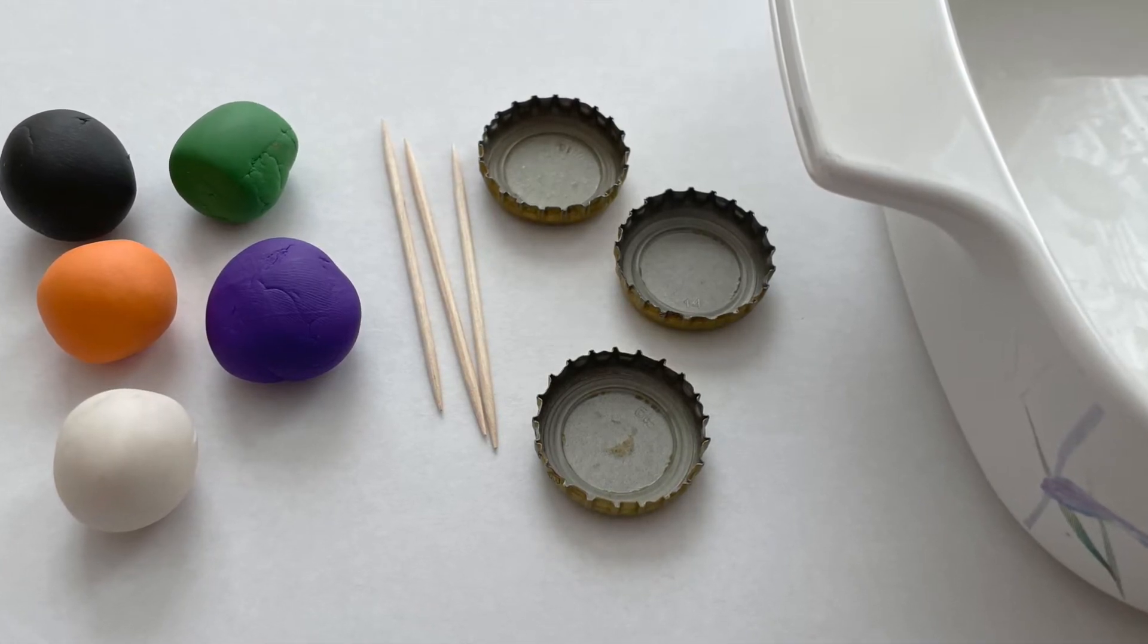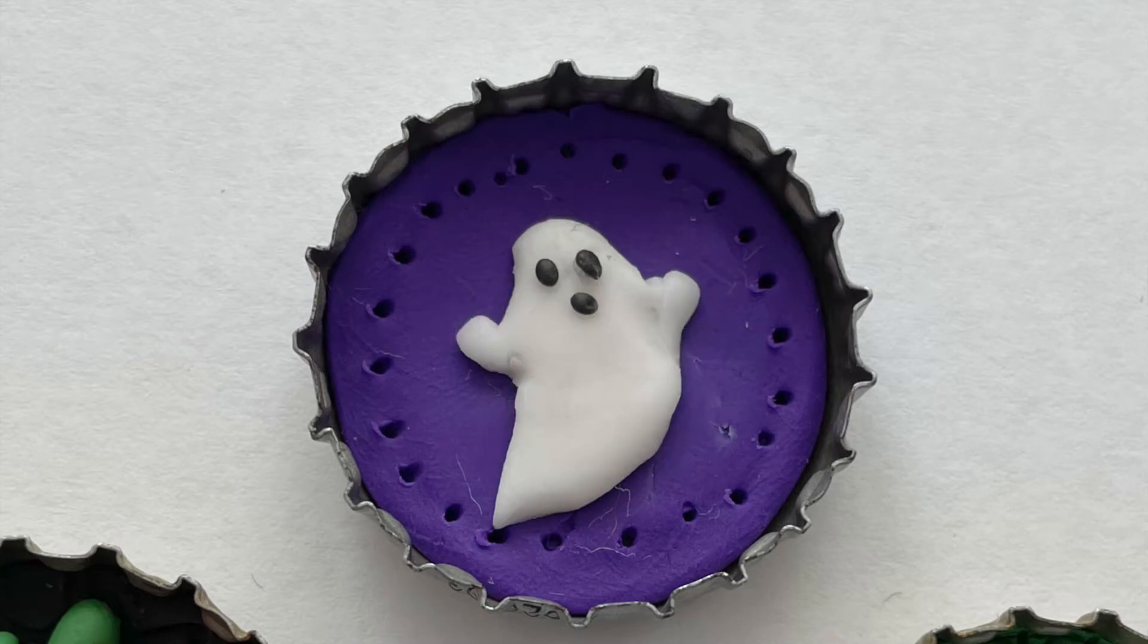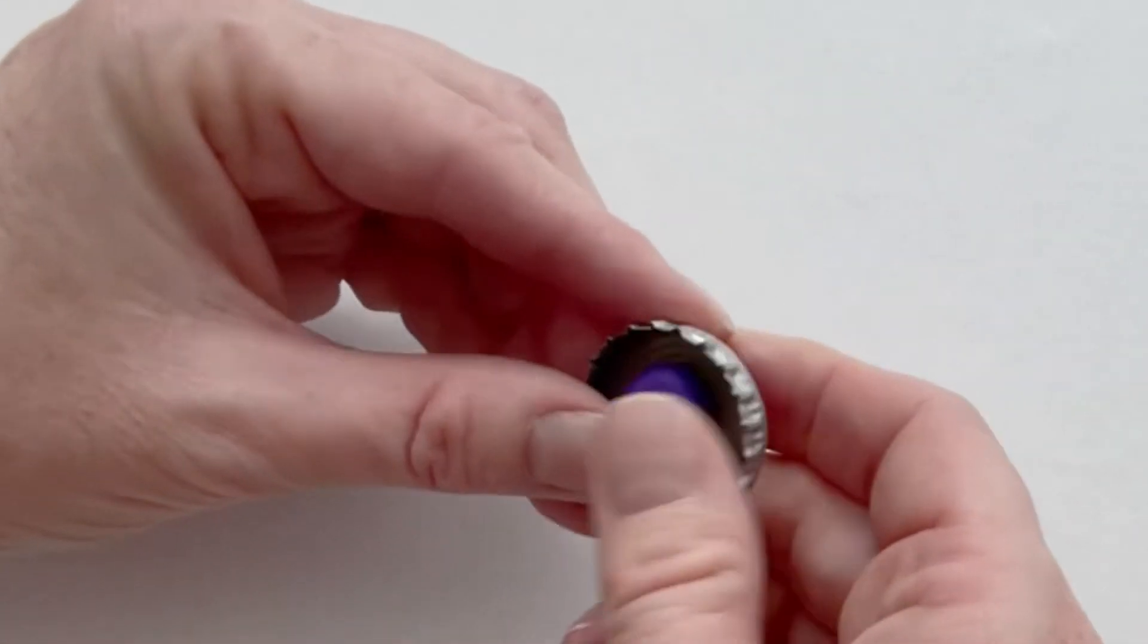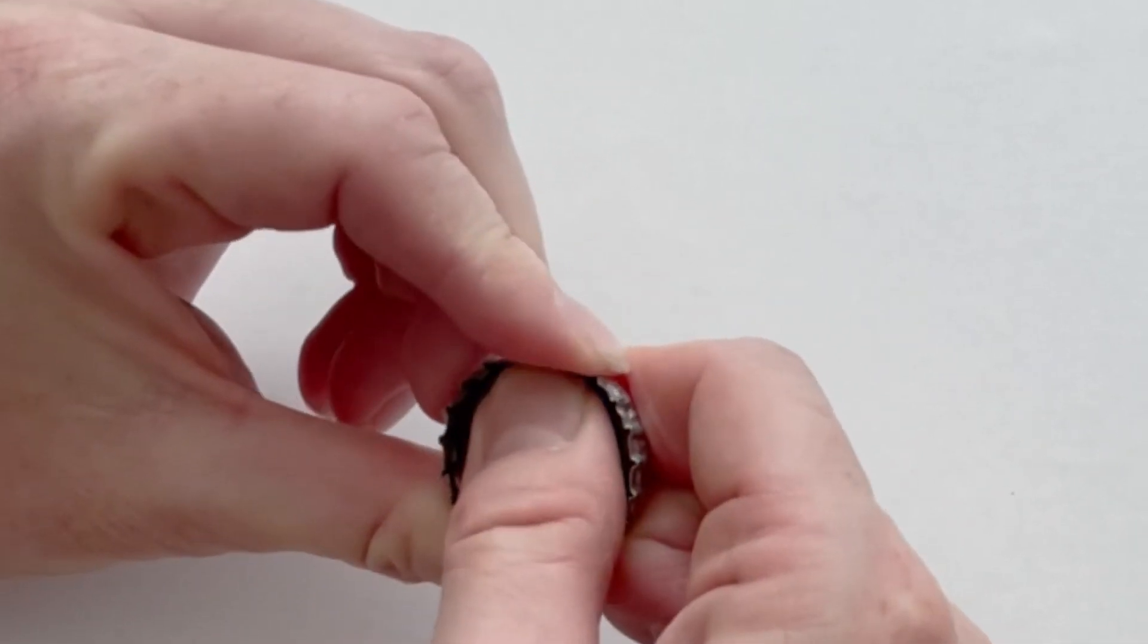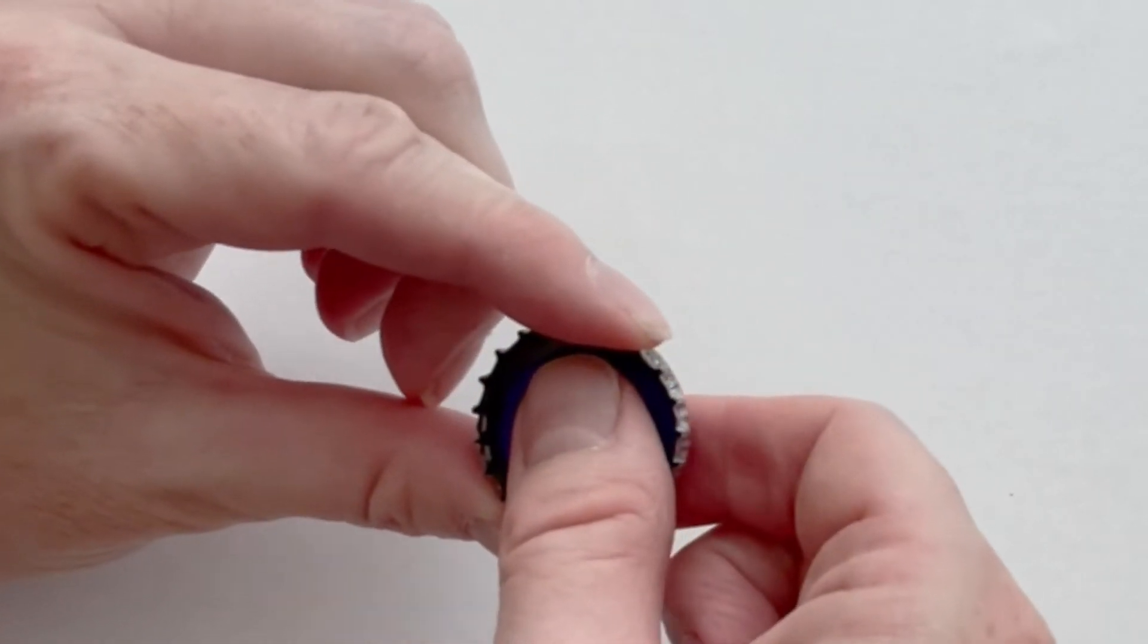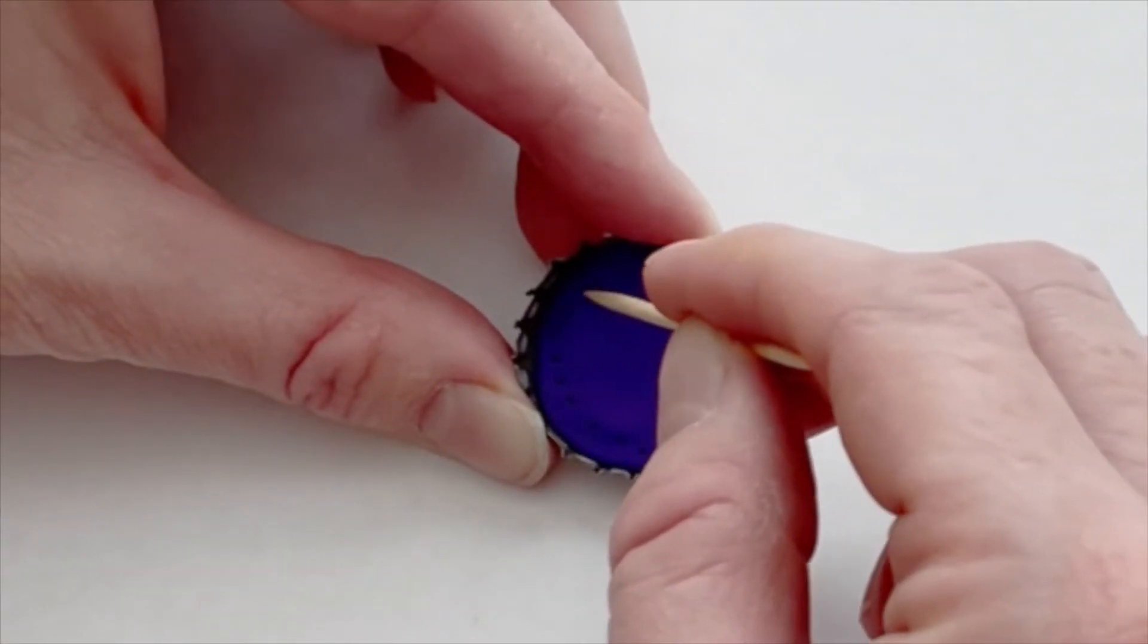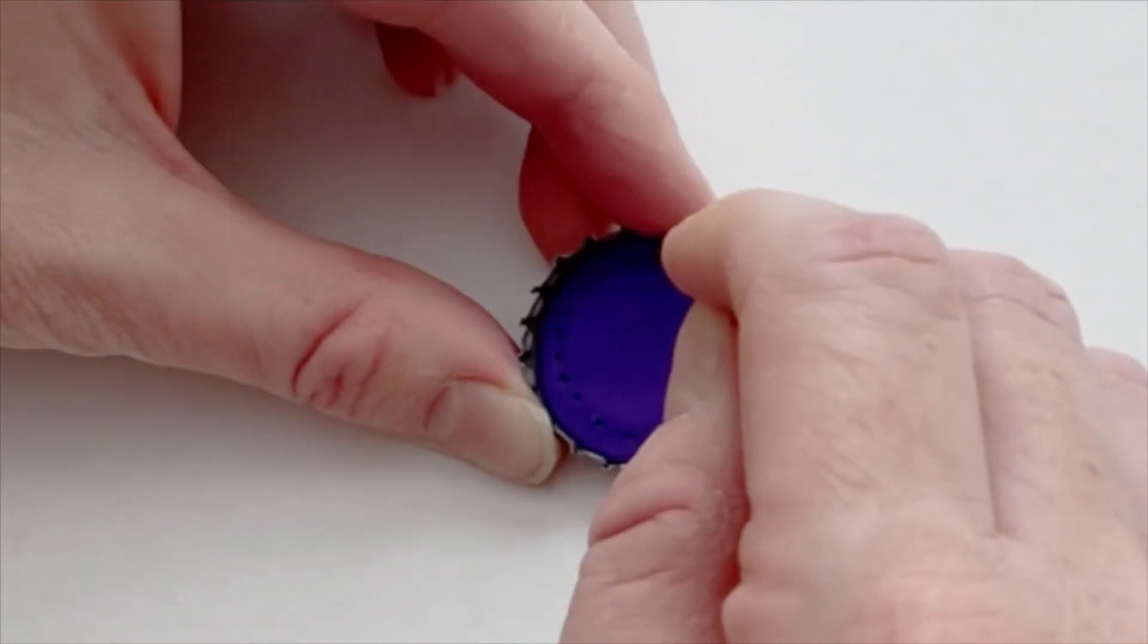To make the ghost bottle cap, I'm going to start with a layer of purple polymer clay. I roll a ball and press it into the bottle cap, making sure to smash it securely into the sides. Make sure it's flat and even. Make a decorative border all around the edge by just poking dots with a toothpick all the way around.